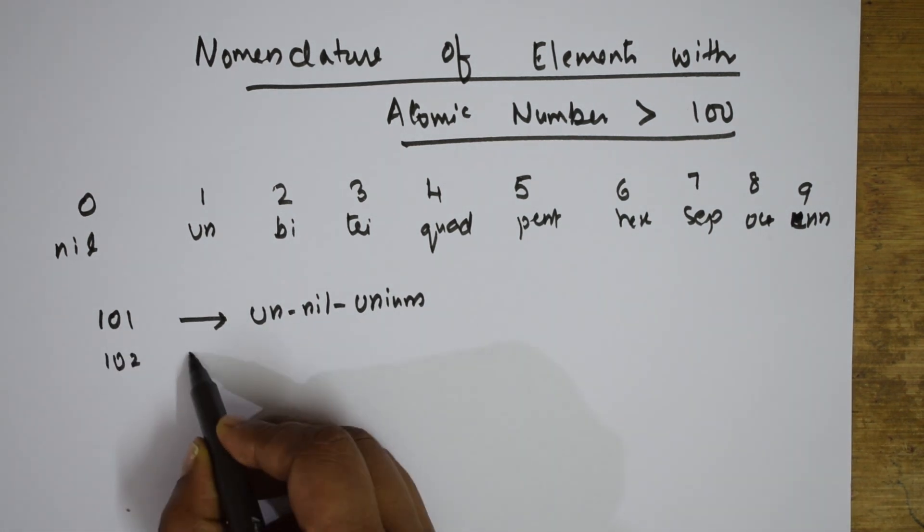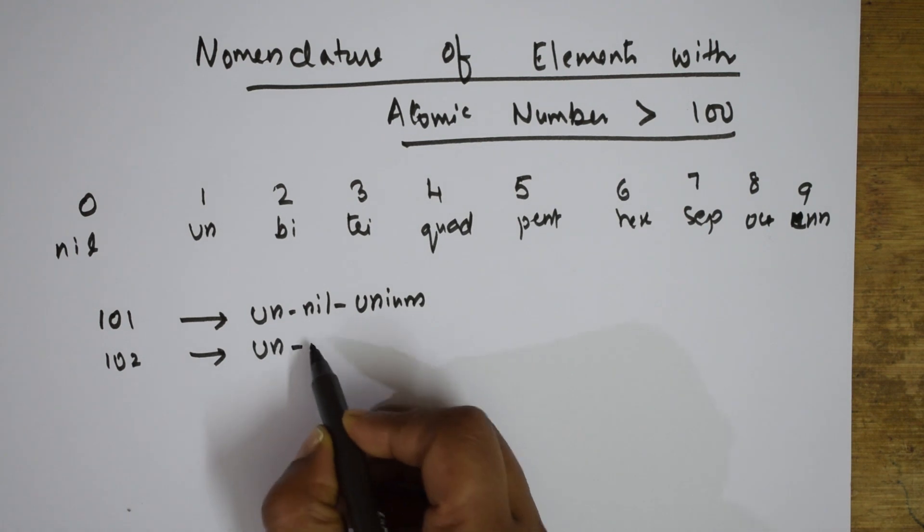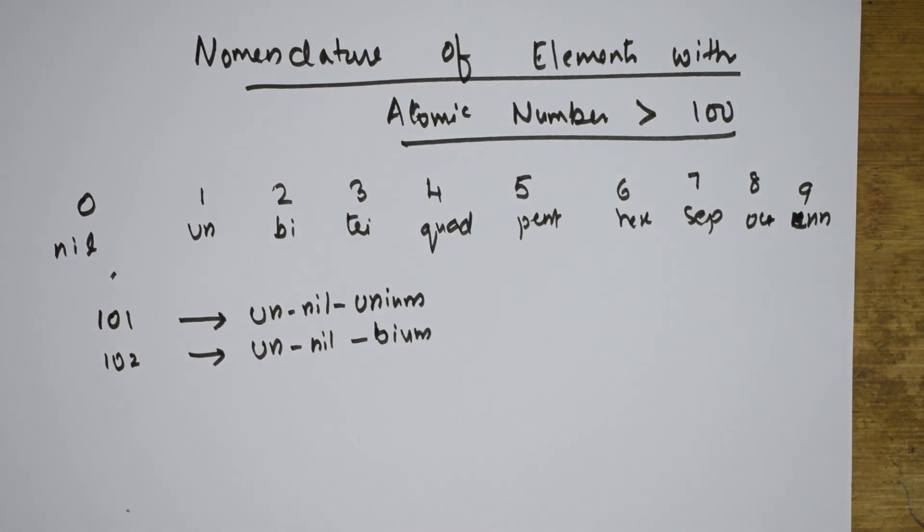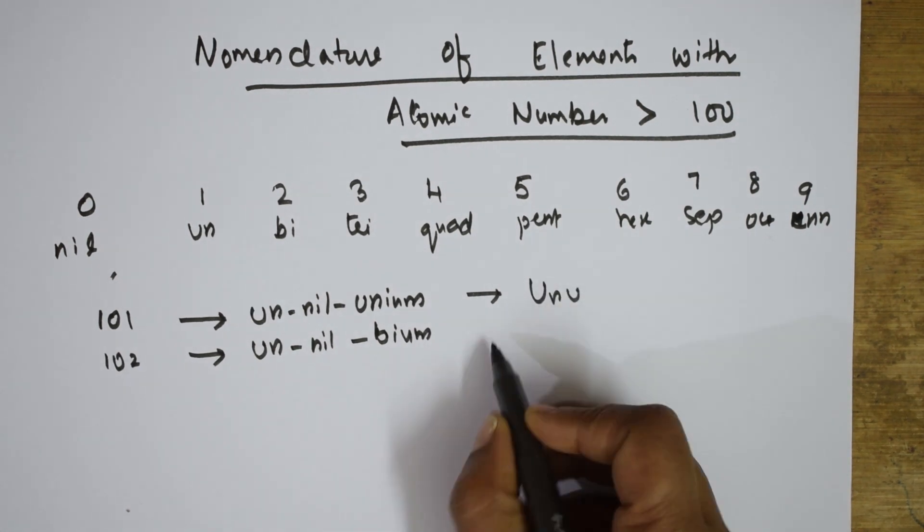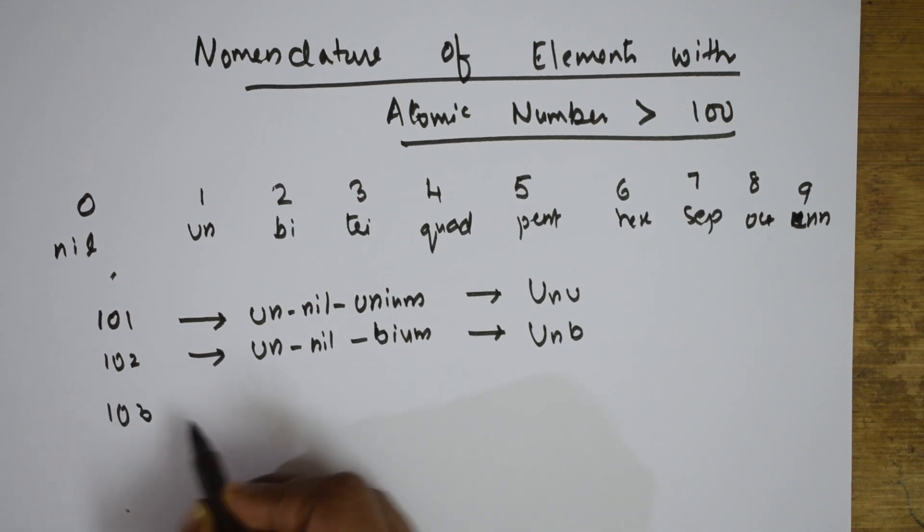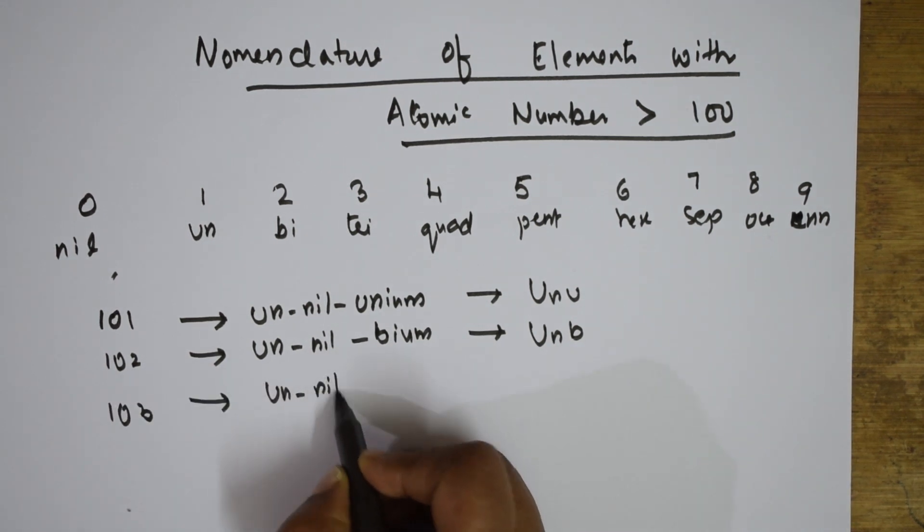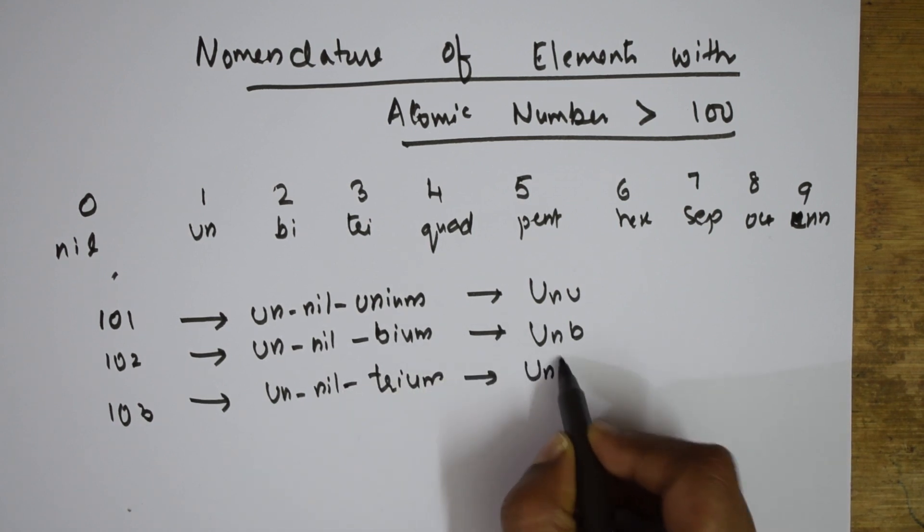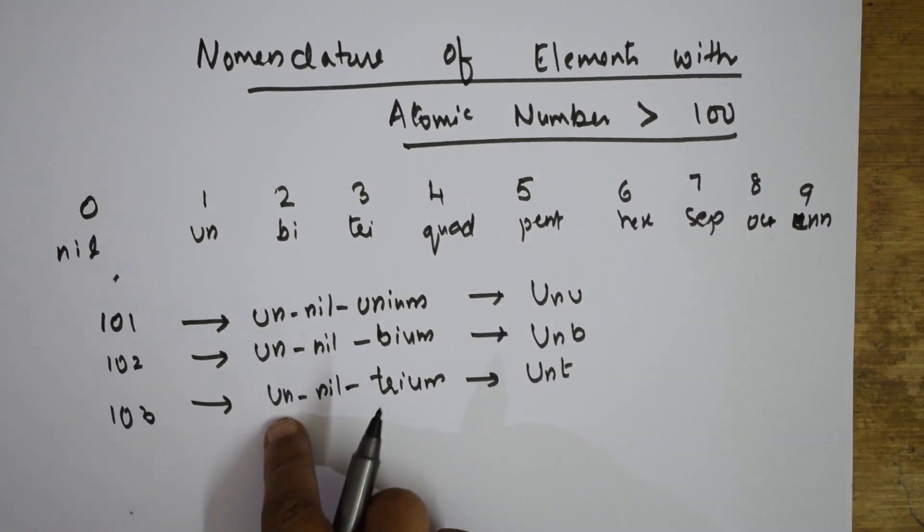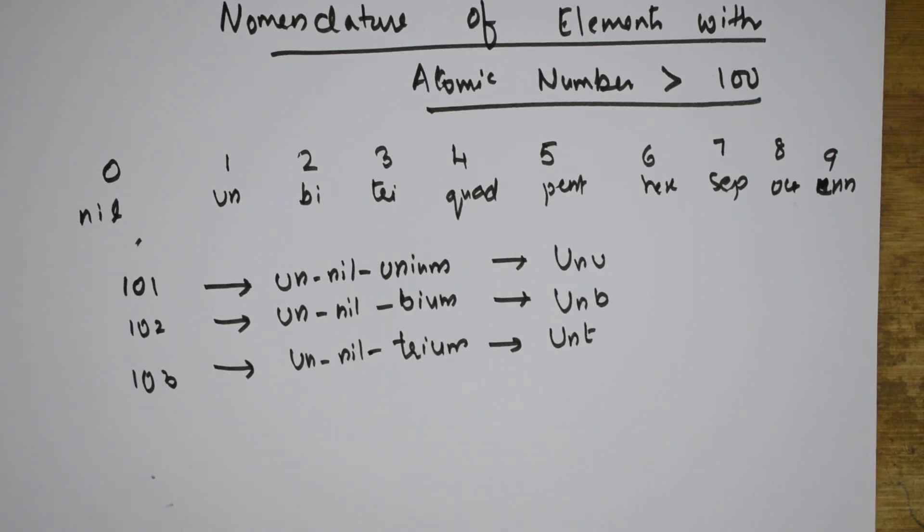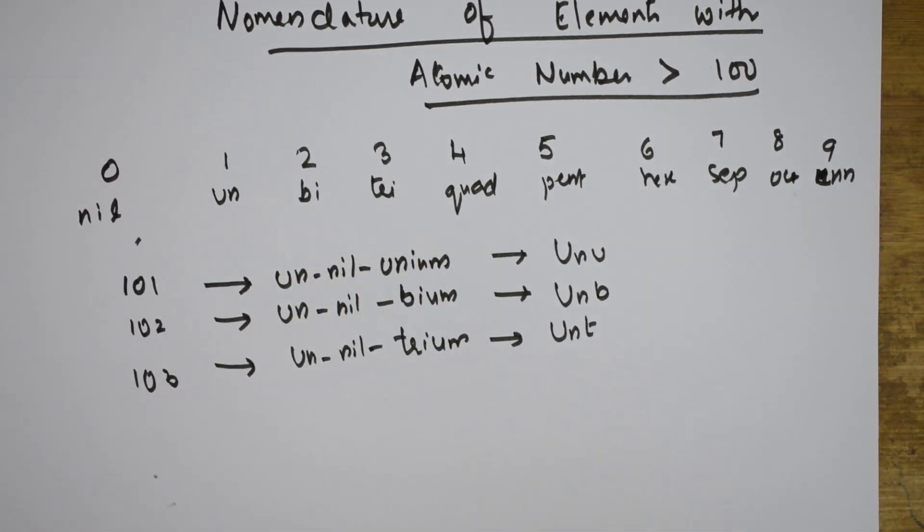Next, 102: un-nil-bium, symbol Unb. 103: un-nil-trium, symbol Unt. So it is clear: un stands for 1, nil stands for 0, 3 means tri, and we add -ium.